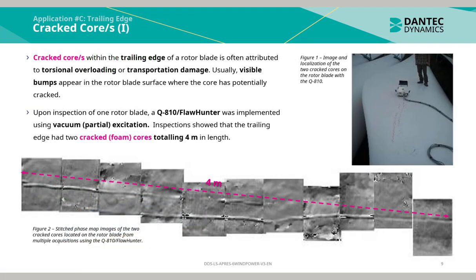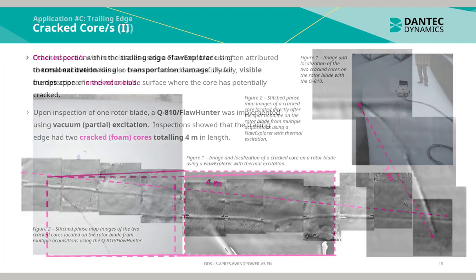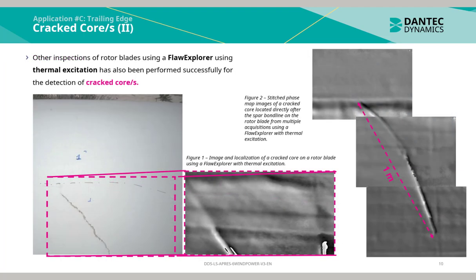Cracked cores within the trailing edge of a rotor blade are often attributed to torsional overloading or transportation damage. Usually visible bumps appear in the rotor blade surface where the core has potentially cracked. Upon inspection of one rotor blade, a Q810 floor hunter was implemented using vacuum partial excitation. Inspections showed that the trailing edge had two cracked foam cores totaling 4 meters in length. Other inspections using a floor explorer with thermal excitation have also been performed successfully for the detection of cracked cores.